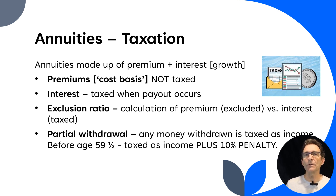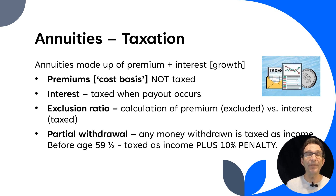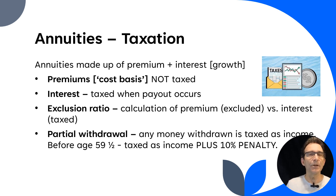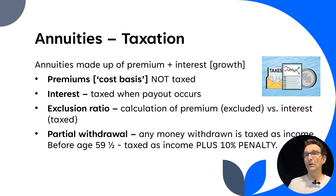You can make partial withdrawals from annuities, and any money withdrawn is taxed as income. Before age 59 and a half, that income is taxed plus you're liable to pay a 10% penalty for early withdrawal. Some of those rules are set up by the IRS to make sure that people are using annuities as a long-term or retirement investment rather than a short-term investment. These rules are similar to IRAs — it's designed so you receive the benefit during a defined retirement age.